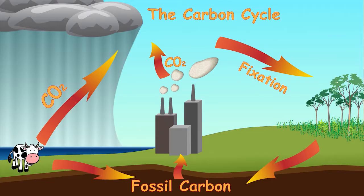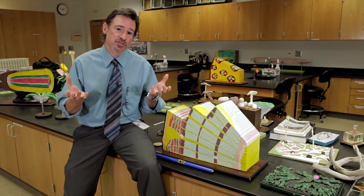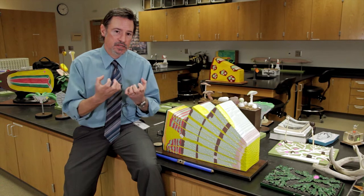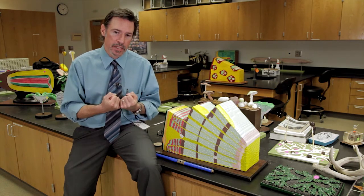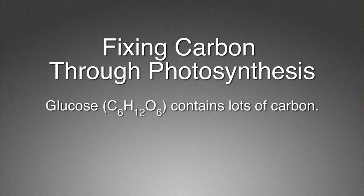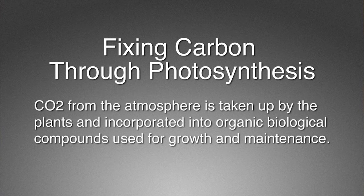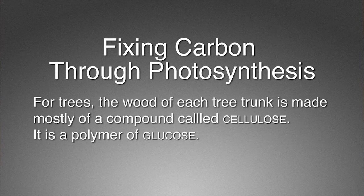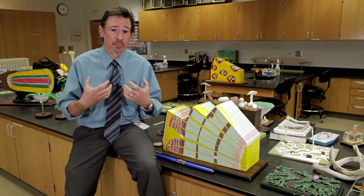When we look at the carbon cycle, I want to focus on how trees, as most plants, can actually take carbon dioxide out of the atmosphere and change that form of carbon from what we refer to as an inorganic form — carbon as CO2 — and through a process normally referred to as fixation, take it into the biological world and build it into organic biological compounds. The biological compound we're going to talk about is glucose.